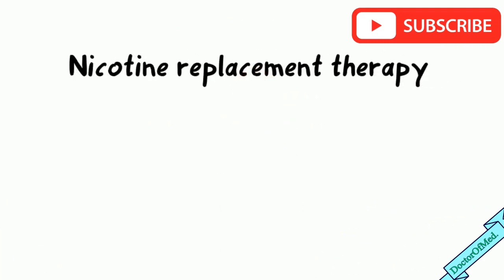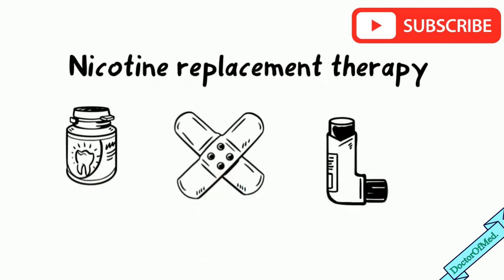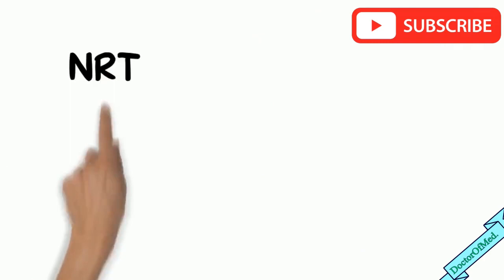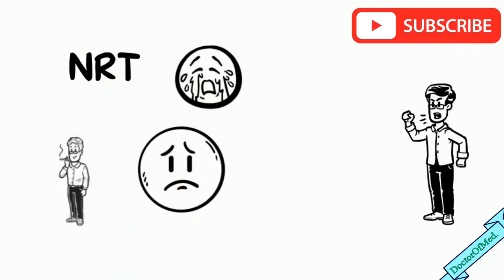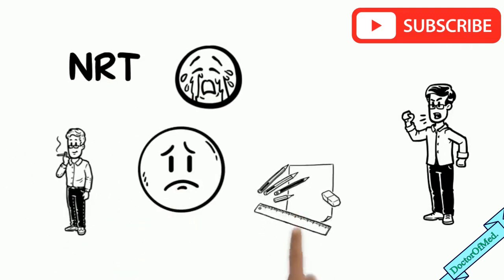Nicotine replacement therapy includes nicotine gums, nicotine skin patch, nasal sprays and lozenges. NRT can reduce the cravings and withdrawal symptoms which makes it difficult to quit smoking. NRTs are designed to supply you with a controlled dose of nicotine while saving you from exposure to other chemicals found in tobacco.